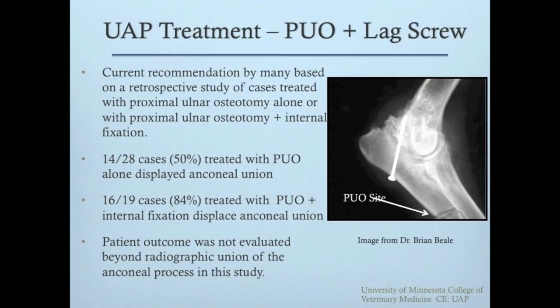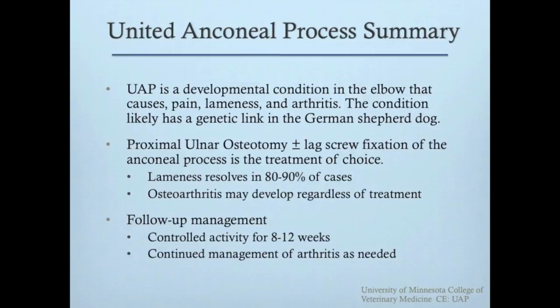The current recommendation by many surgeons is to perform both proximal ulnar osteotomy and place a lag screw. One multicenter retrospective paper reported that proximal ulnar osteotomy alone resulted in UAP fusion 50% of the time, while combined proximal ulnar osteotomy and lag screw fixation resulted in fusion 84% of the time. An ununited anconeal process is a developmental condition causing elbow pain and lameness, most often seen in the Basset Hound and German Shepherd. Proximal ulnar osteotomy with or without lag screw fixation is the recommended treatment.